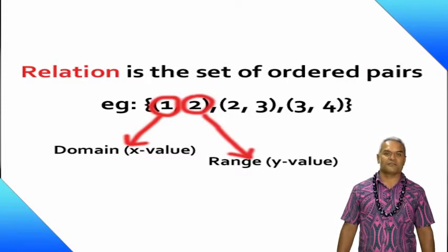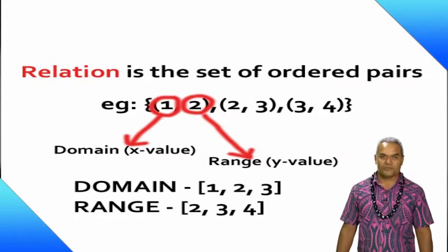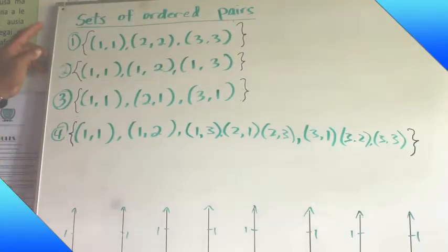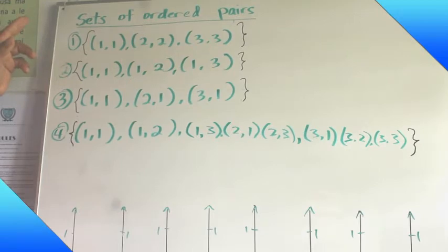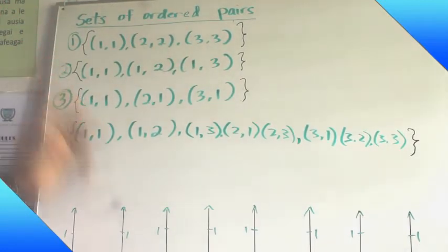So during your class activity, list the domains and the range of the set of ordered pairs. Here is the last section of our lesson today. Remember that the lesson is a set of ordered pairs. Have a look at these four sets of ordered pairs. It means that the set of ordered pairs can be drawn or related, it can be drawn by using an arrow diagram.